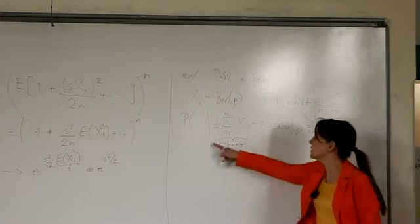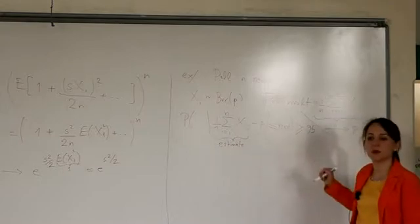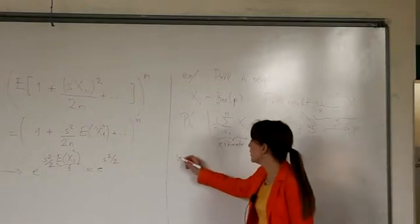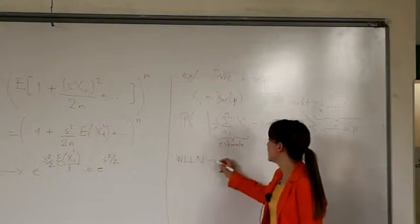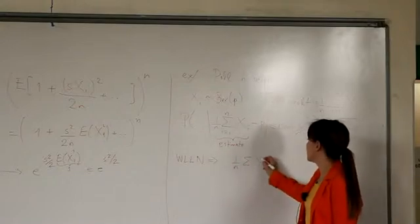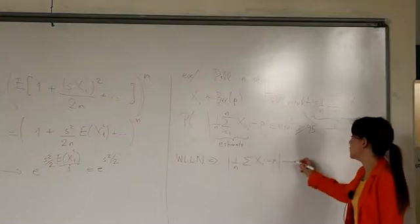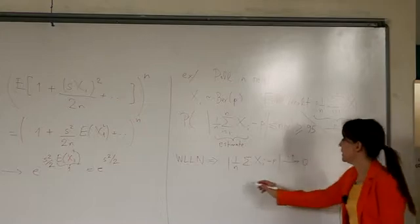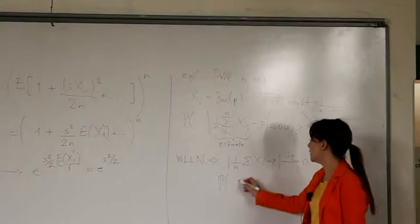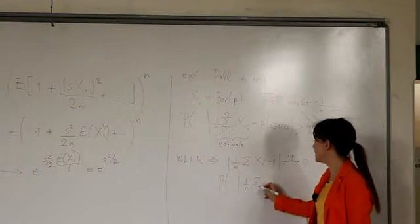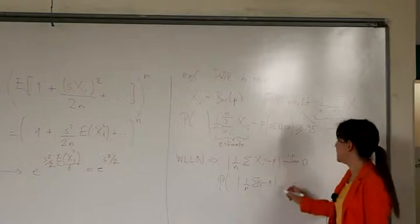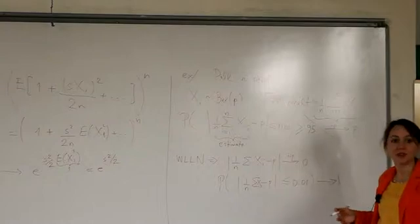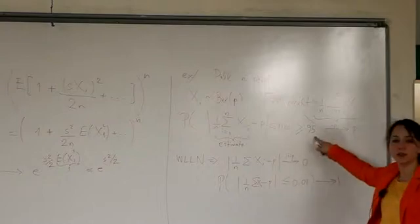This difference converges in probability to 0 by the weak law of large numbers. By the weak law of large numbers, 1 over n sum of xi minus p converges to 0 in probability. Meaning the probability that this absolute difference is less than or equal to 0.01 is converging to 1. So eventually it will go to 1. But we want to stop at 0.01.